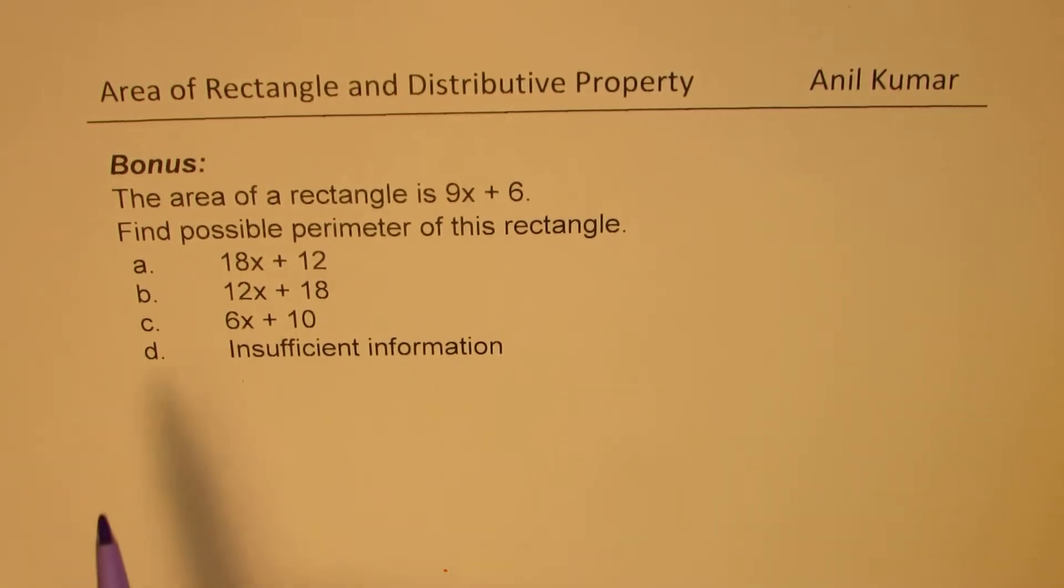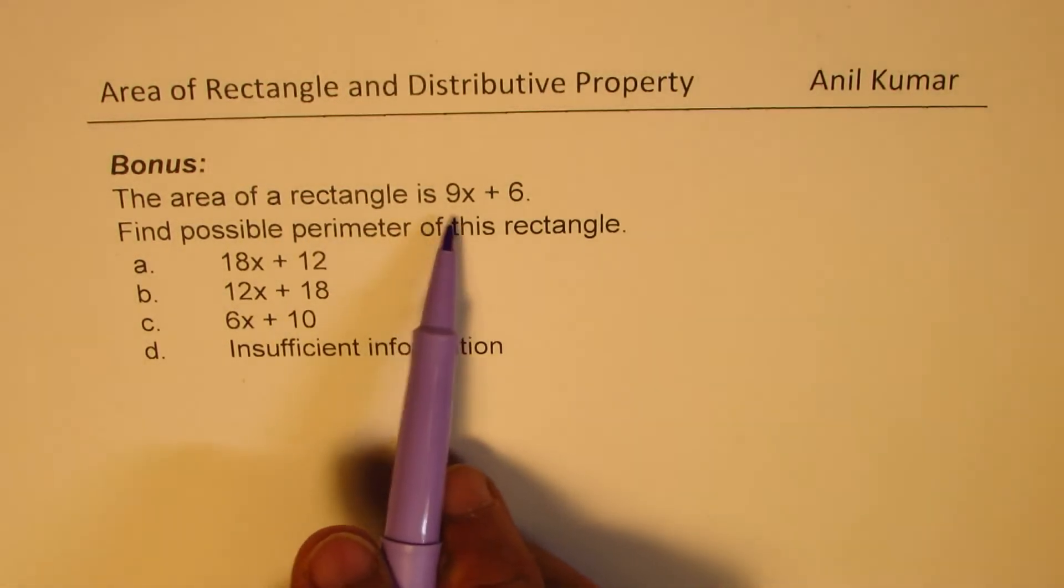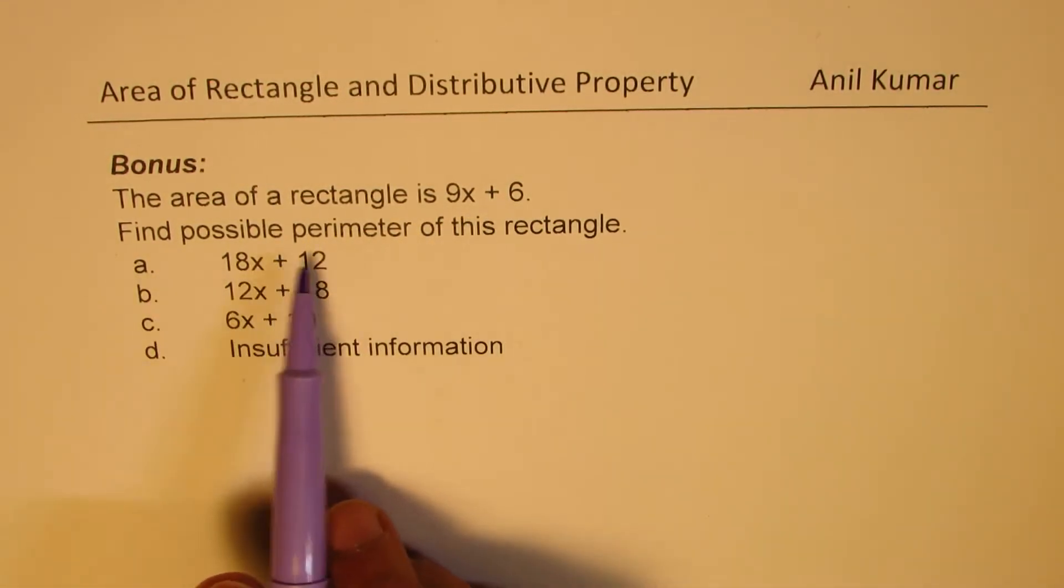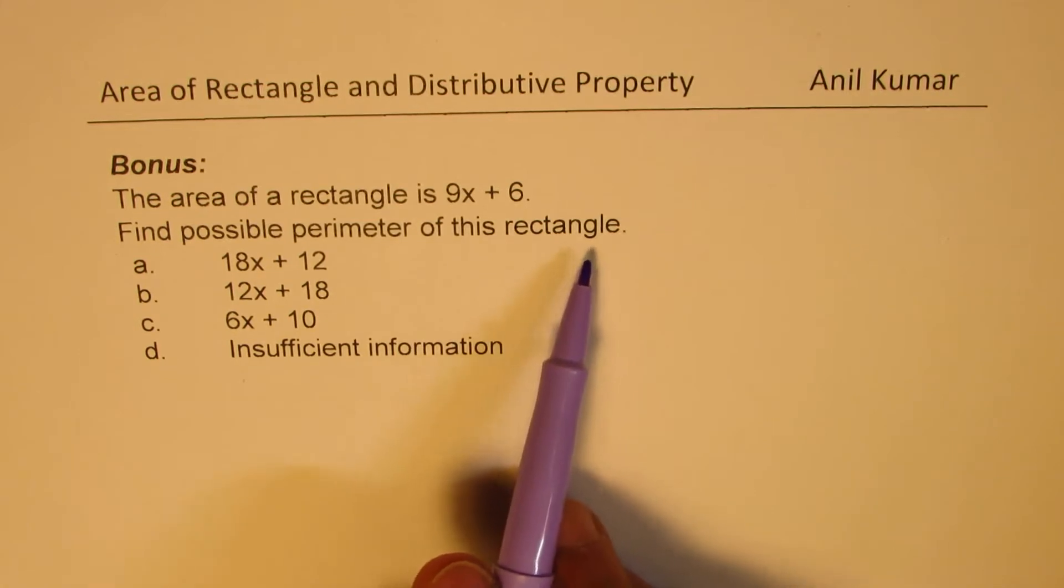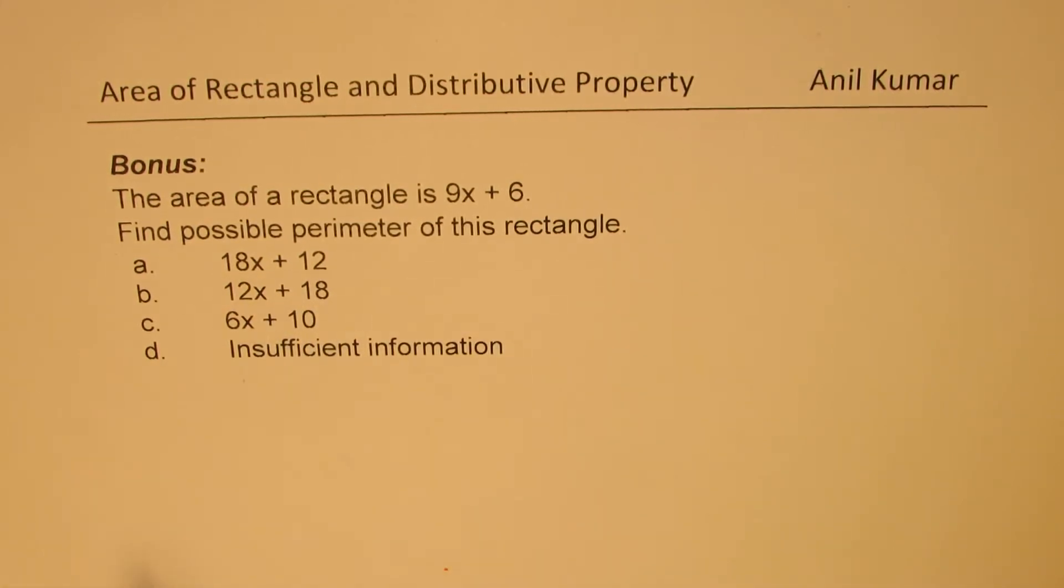The question here is: the area of a rectangle is 9x + 6. Find possible perimeter of this rectangle. Four choices are given to us. How do we solve such a question?